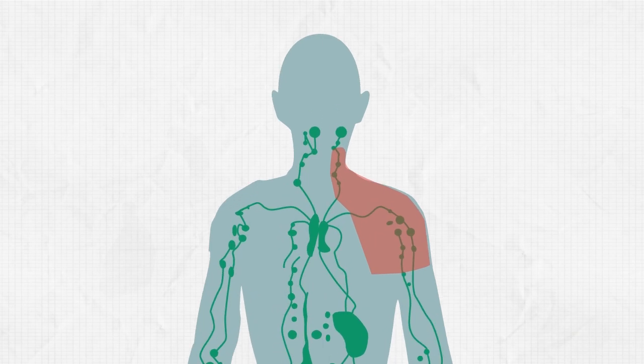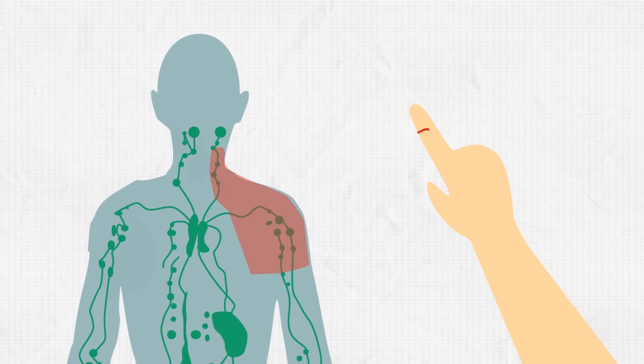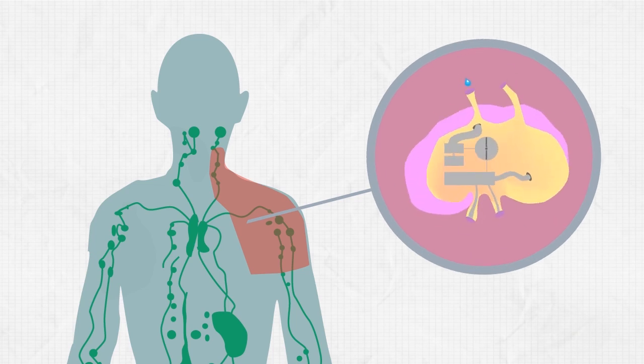As this water is pumped back up to your shoulder, it has to be cleaned so that the bits of debris in the water stream, say if you get a cut, don't get into your bloodstream and make you sick. The lymphatic system pumps all that water through at least one lymph node.